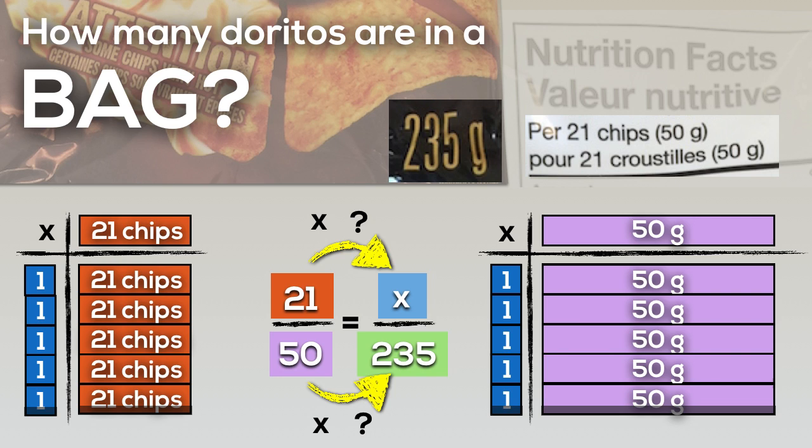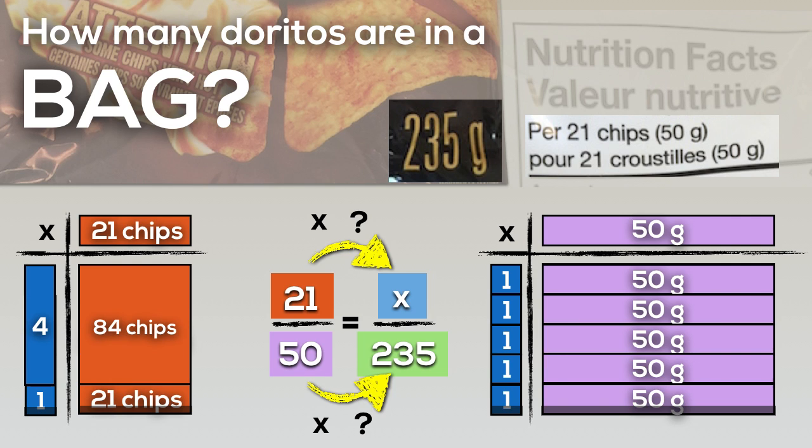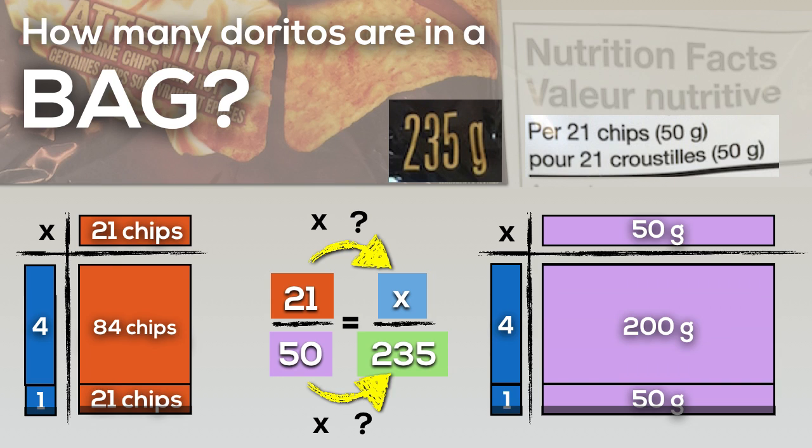So if we clean this up a little bit and we know that 21 times 4 is equal to 84, and 4 times 50 is equal to 200, that should give us at least a starting point for our students to at least get a reasonable answer or at least an approximation.